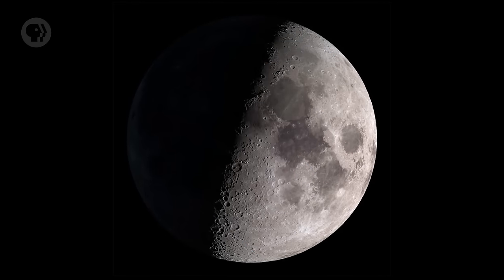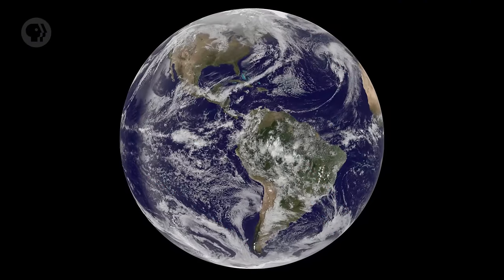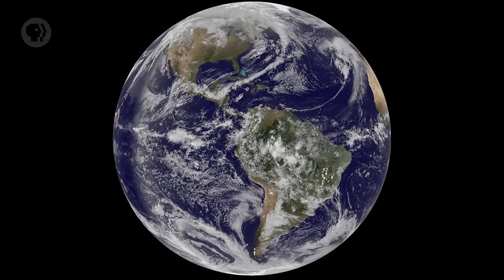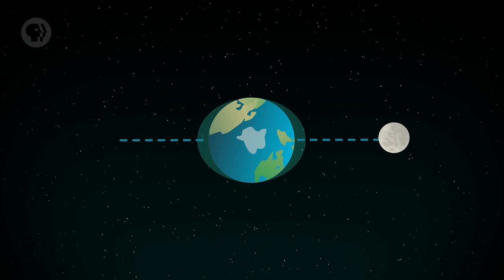Look at the Moon. It has gravity, but much less than the Earth because it's less massive. It's 380,000 kilometers away, so the gravitational force it has on you is pretty small. But the Earth is big — nearly 13,000 kilometers across. That means the side of the Earth facing the Moon is about 13,000 kilometers closer to the Moon than the other side. The side of the Earth facing the Moon is pulled harder by the Moon, so the Earth stretches, becoming ever-so-slightly football-shaped, like a sphere with two bulges — one pointing toward the Moon and one pointing away.